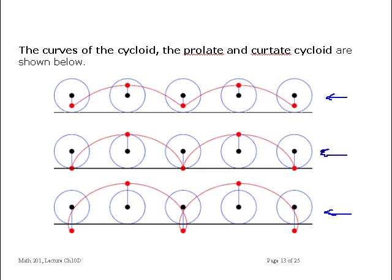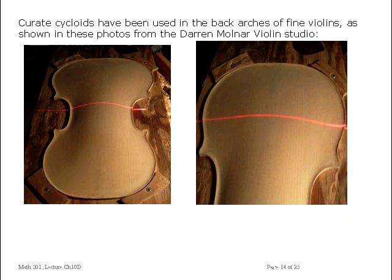One place that you can see the curtate cycloid is on the back of a violin. These curves shown in red for the back arch of a violin, those curves are curtate cycloids. They're not just some arbitrary curve. Probably should have included this with the cycloid, but it didn't make it in the other lecture, but I wanted to show it to you. It's very interesting.